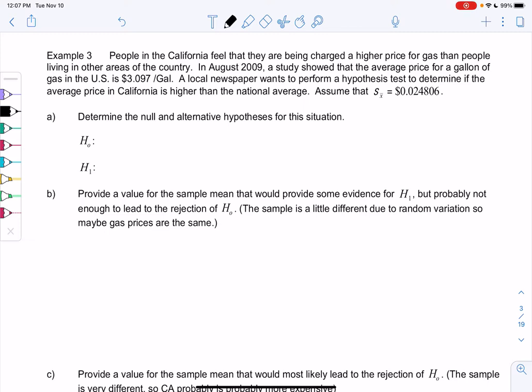In August 2009, a study showed that the average price per gallon in the U.S. was $3.09 and 7 tenths, so $3.097.